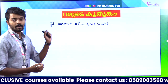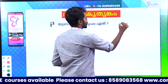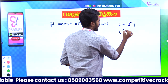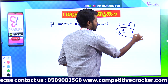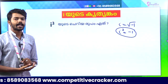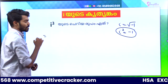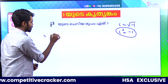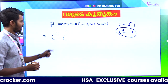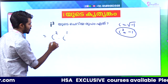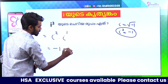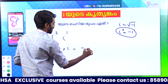Now, i is defined as root minus 1. If i is equal to root minus 1, then i squared is equal to minus 1. What do we call i cube? i cube is i squared into i raised to 1. 2 plus 1 is 3. That is equal to i squared times i, which is minus 1 times i.